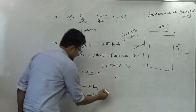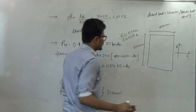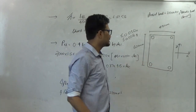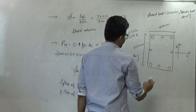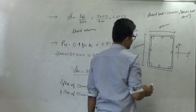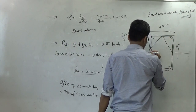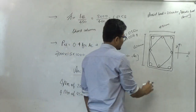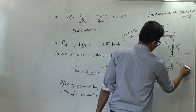The total area of these 8 reinforcement bars comes out to be 3220 mm². The 25 mm diameter bars are placed at the extreme corners of the column section, and the 20 mm diameter bars are placed at intermediate locations. All 8 bars are tied together with lateral ties to prevent buckling failure of the longitudinal bars.